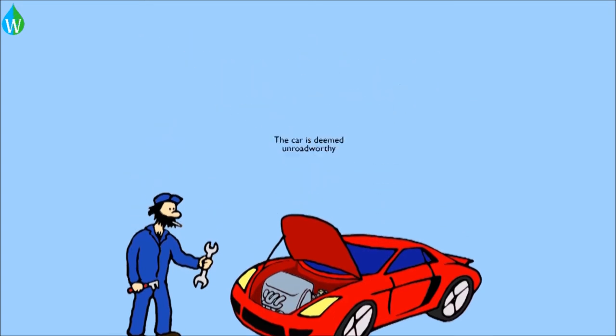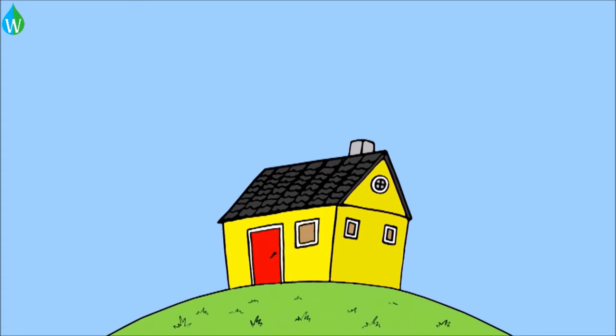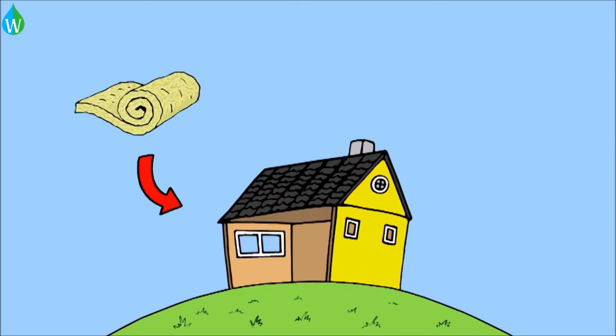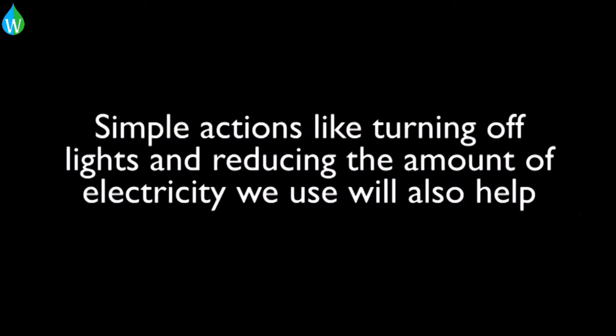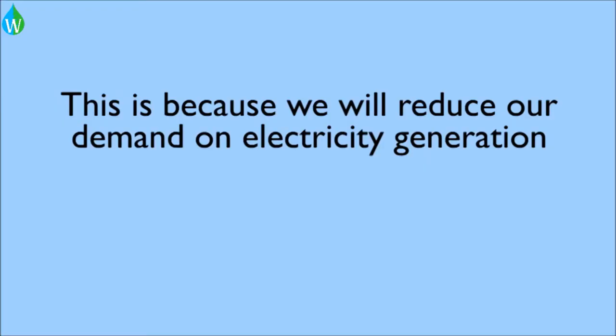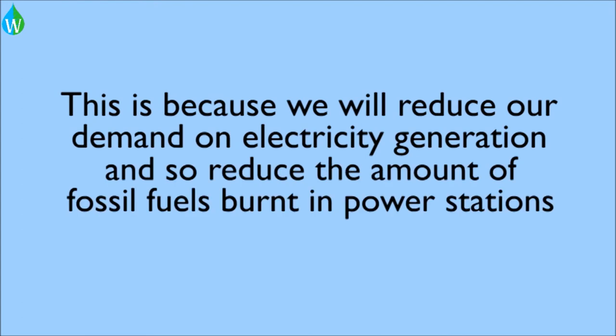We can also reduce outside particulate matter by ensuring that we're more energy efficient in our homes. Homes that are better insulated do not need heating or cooling and so burn less fossil fuels. Similarly, simple actions like turning off lights and reducing the amount of electricity we use will also help. This is because we will reduce our demand for electricity generation and so reduce the amount of fossil fuels burnt in power stations.